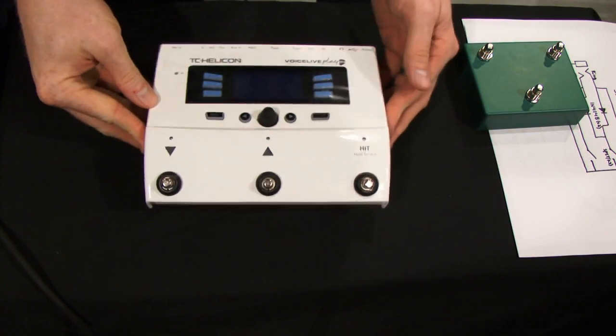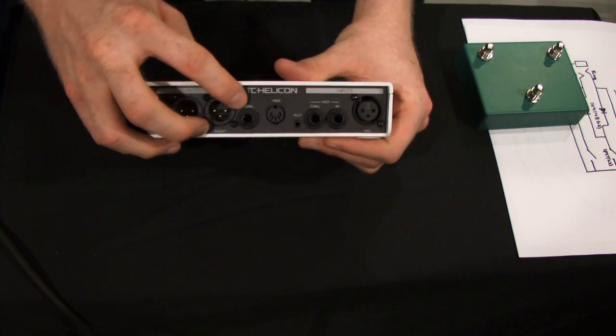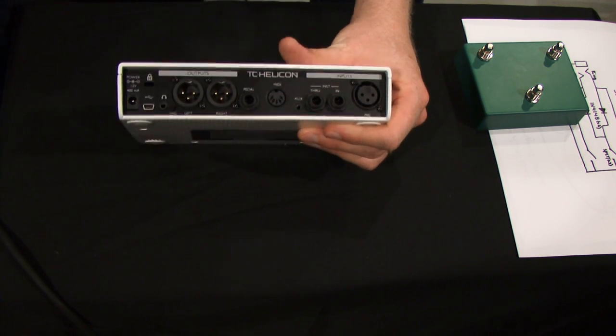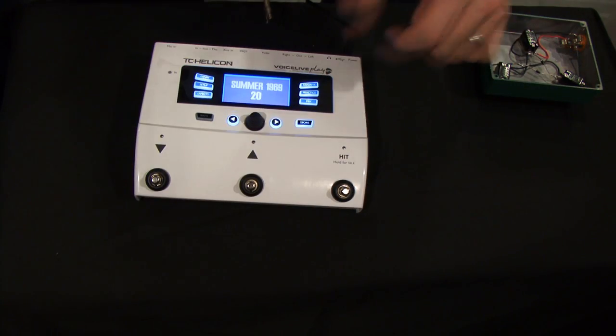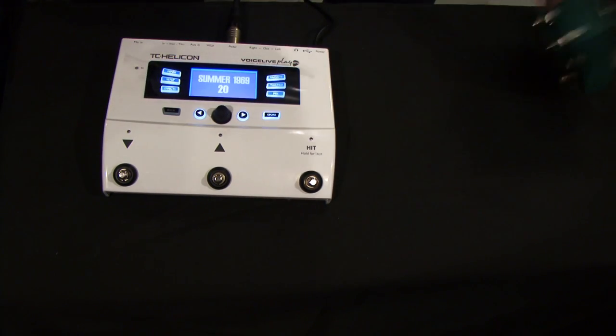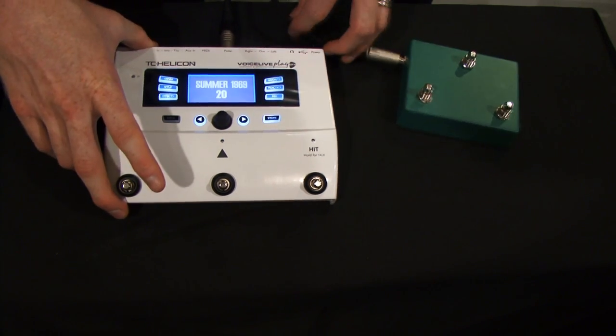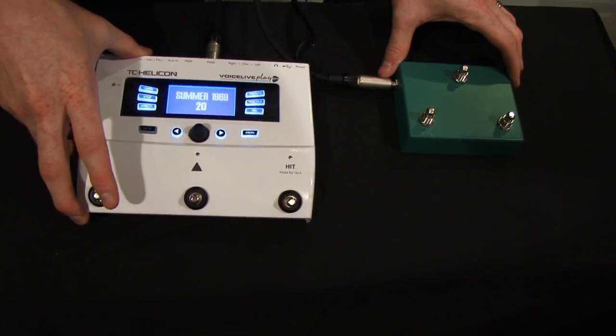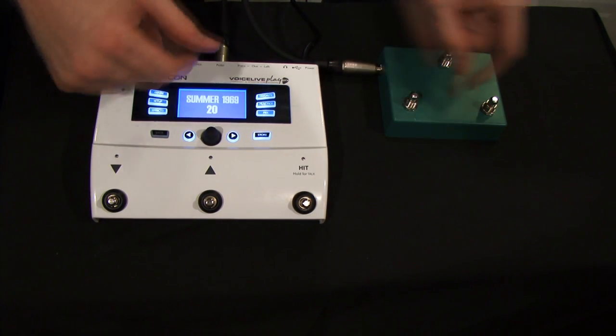Alright, we've got the TC Helicon right here. If you look on the back you'll see this switch right here that is for a pedal, and that's what the Switch 3 plugs into with the stereo plug. So I'm going to go ahead and just plug this in and then plug it into my effects pedal here. You can see that immediately it recognized that it was there, and this Switch 3, or the DIY Switch 3 here, will do a couple different functions.